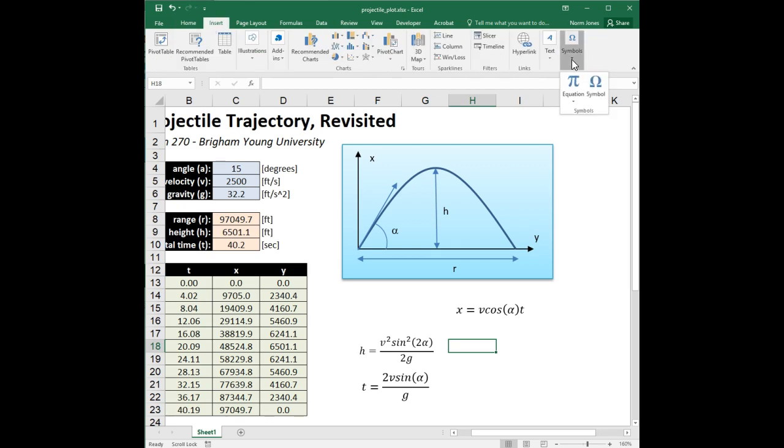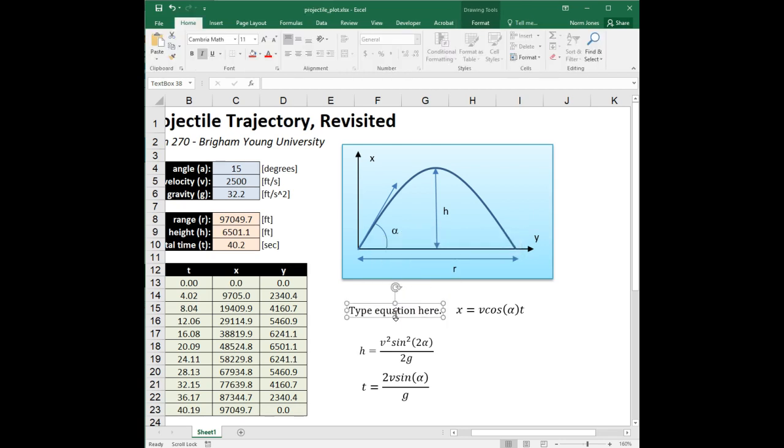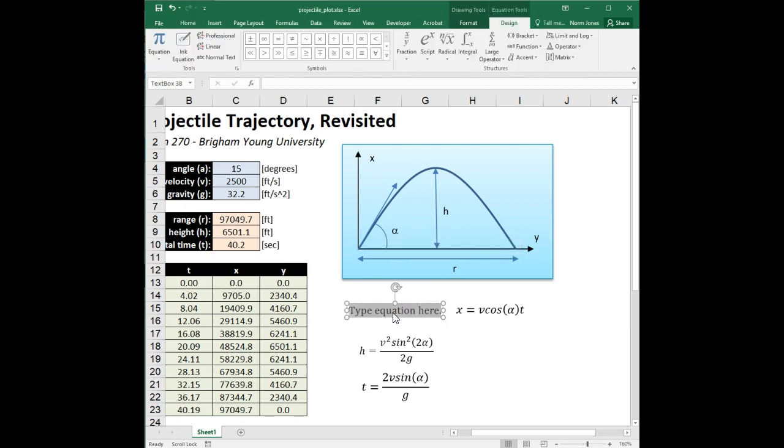The way we do that is you go to the insert menu and go to the very end under symbols. There's equation, and once you do that it creates this placeholder for your equation and it pops you into the equation editor.